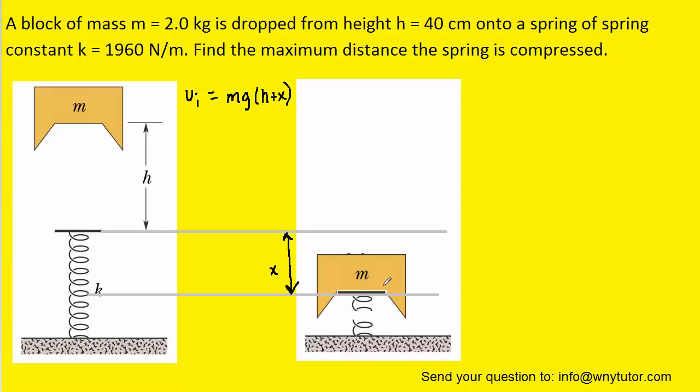In the final scenario the block comes to rest, it's no longer at a given height, so the gravitational potential energy is now zero. The only energy present would be the spring potential energy, which we know would equal the following expression here. Through the conservation of energy we can set the final energy equal to the initial energy.